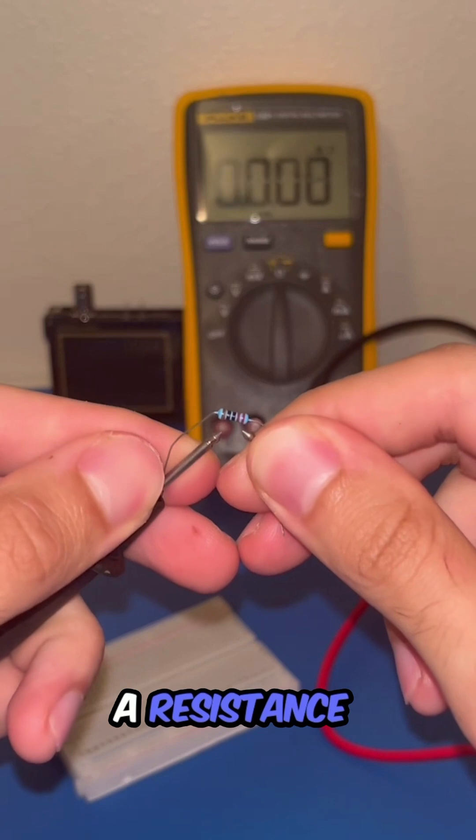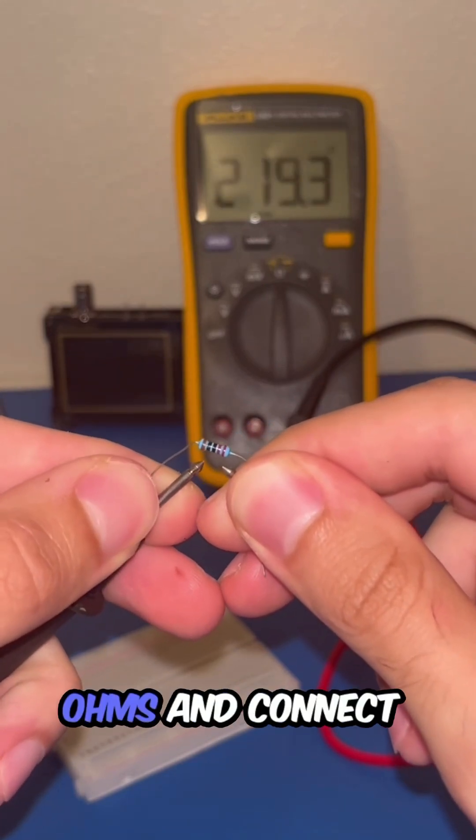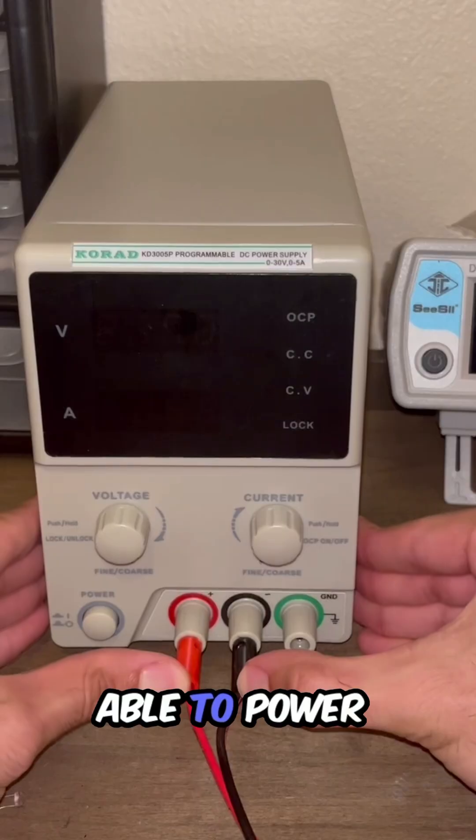If we take a resistor with a resistance around 220 ohms and connect the resistor in series with the LED, we'll be able to power it safely.